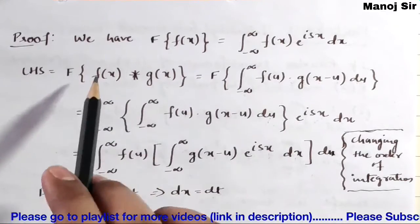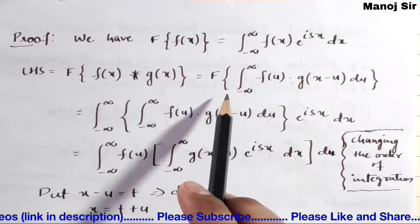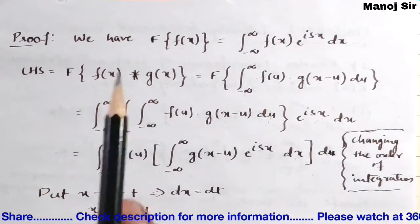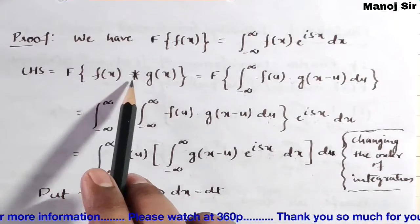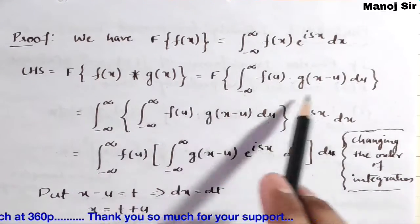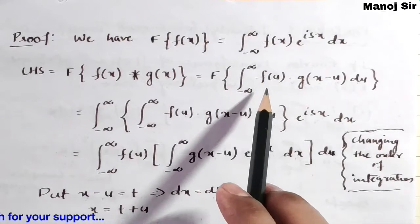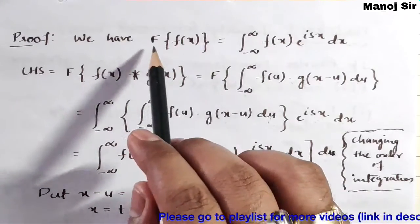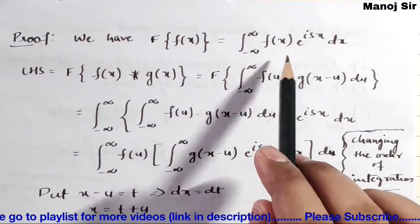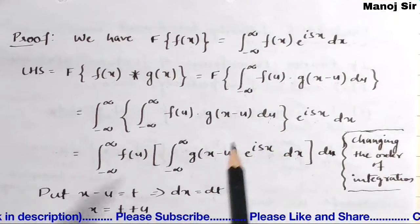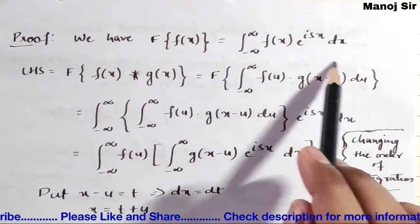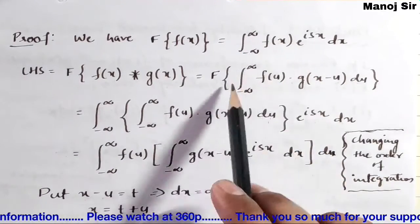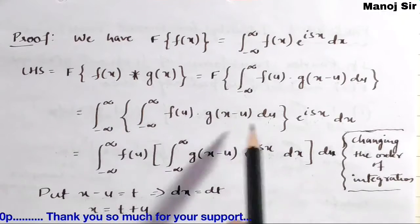The left hand side equals — using the formula for convolution — integration from minus infinity to plus infinity of f(u) into g(x minus u) du. It means finding the Fourier transform of this convolution means finding the Fourier transform of this integral. Now applying the Fourier transform formula, the function f(x) here is this integration.